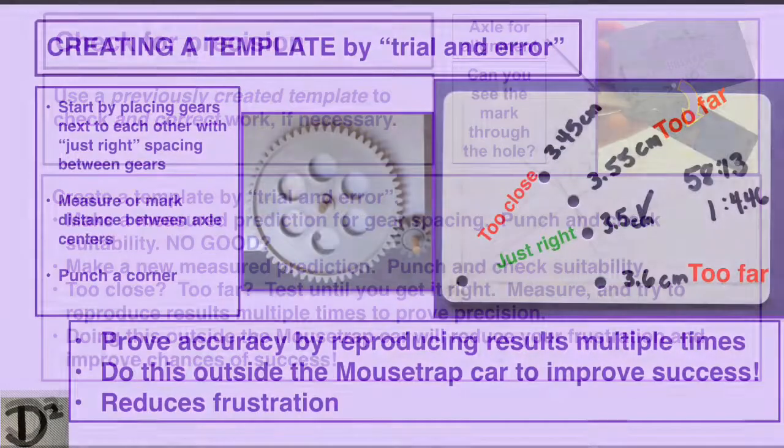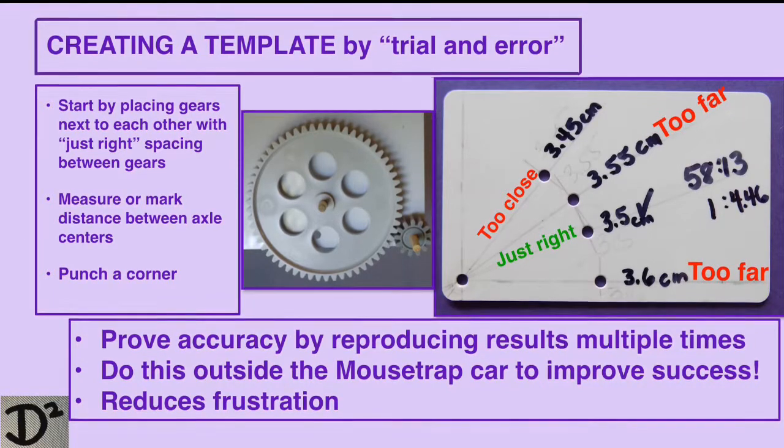If the gears are too far apart, make a new mark that's slightly closer. Label, punch, sand and check.